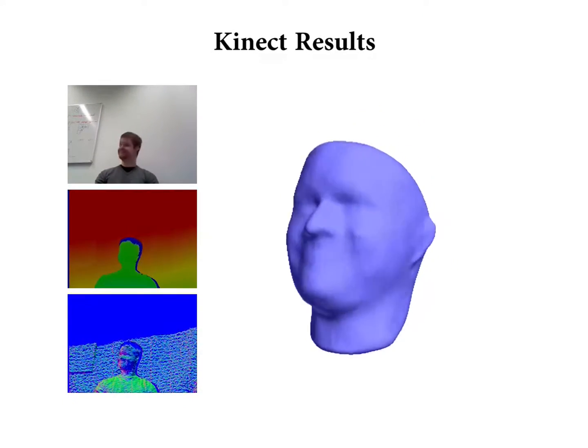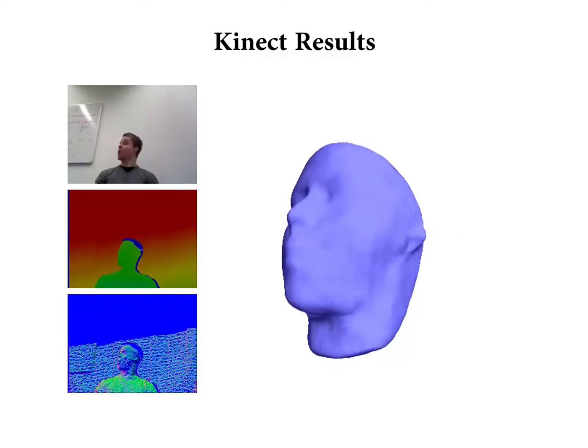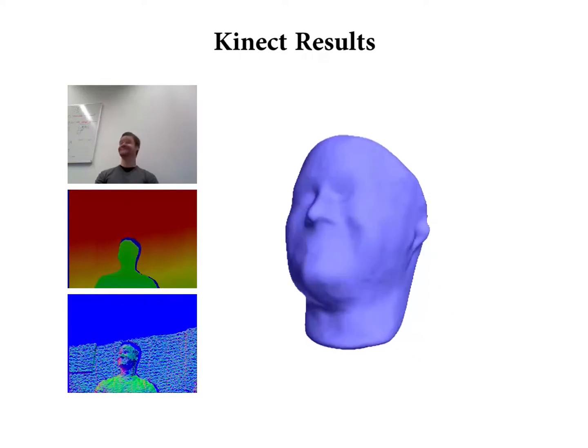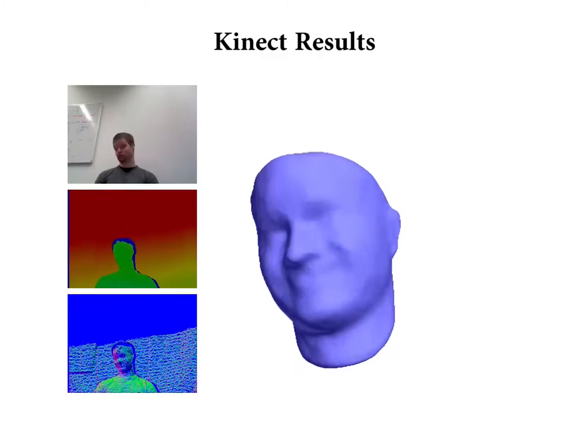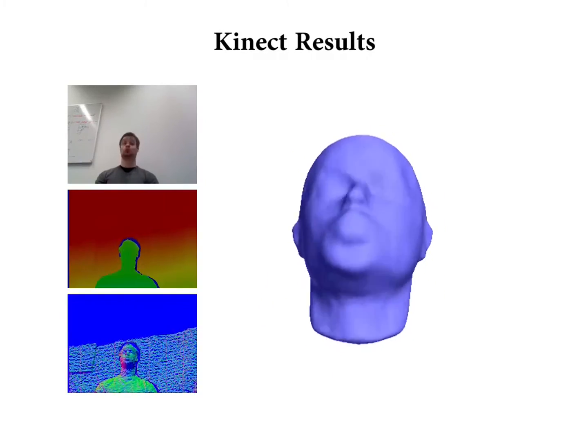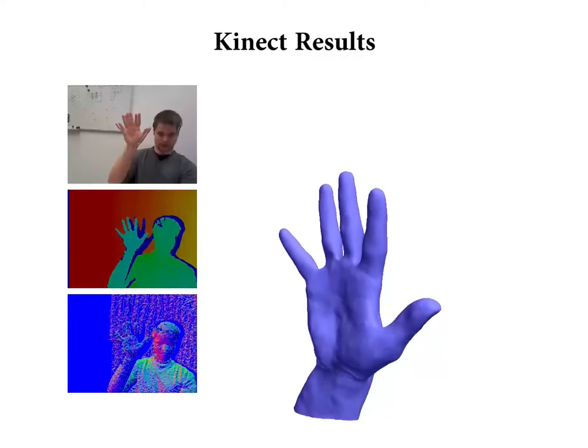We have also tested our method on many different RGBD cameras, such as the Microsoft Kinect. While we are still able to track many of the non-rigid changes, the Kinect's low depth resolution prevents us from capturing local surface detail.